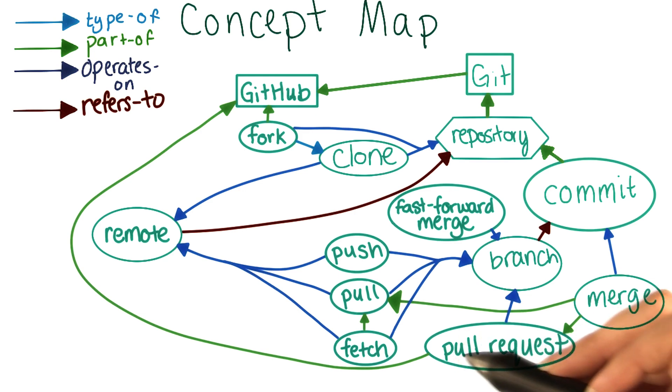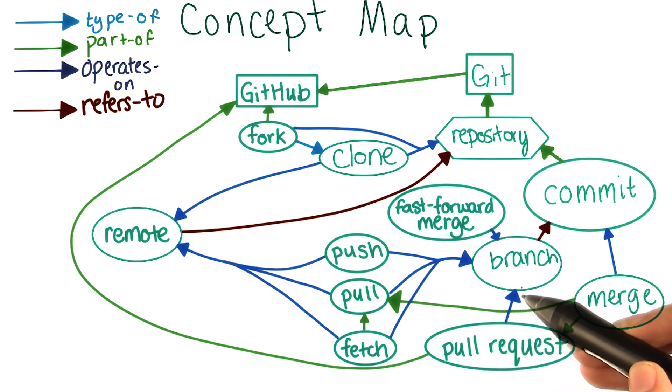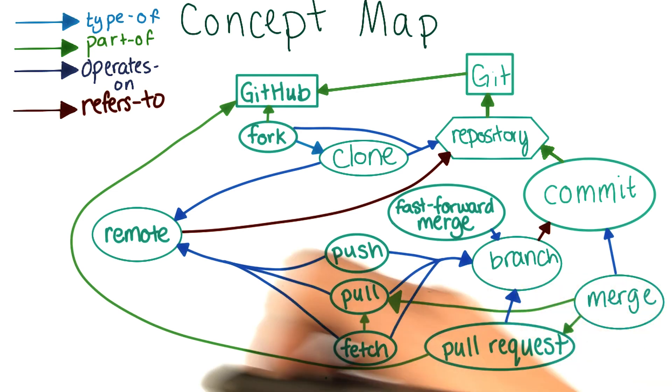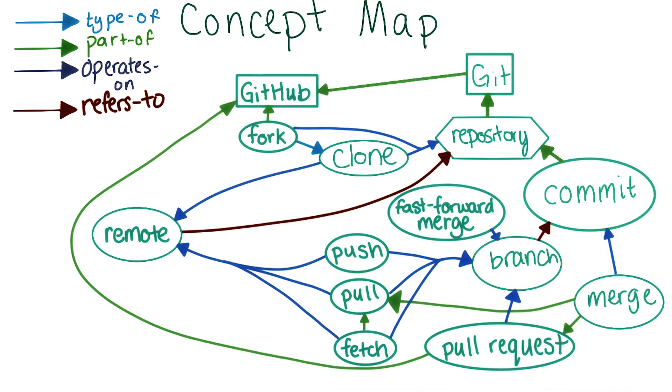And pull requests are a purely GitHub idea. They don't exist in git proper. So merges are part of pull requests. Pull requests work on branches. You merge two branches together. And it's something that's part of GitHub. So it all fits.